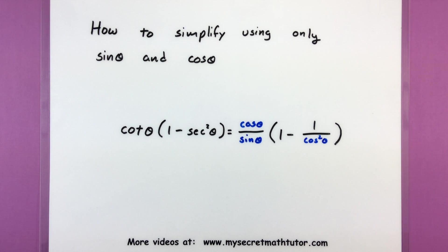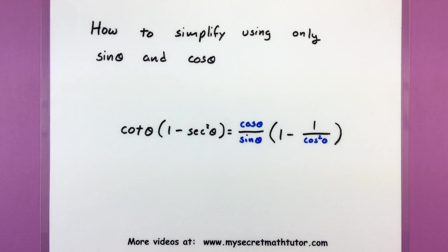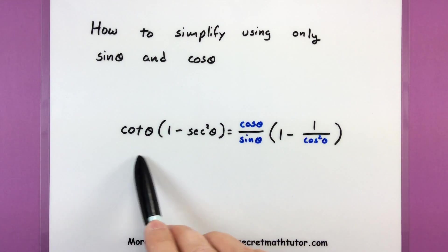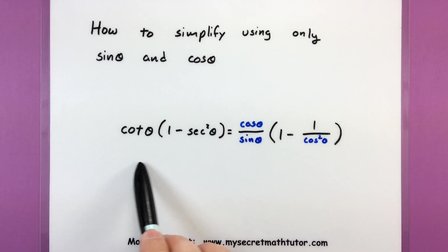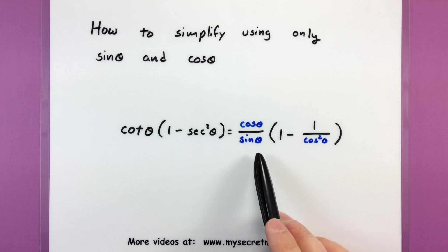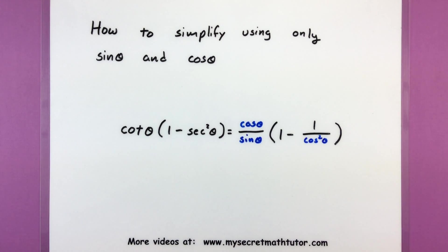Hello and welcome to My Secret Math Tutor. For this video we're going to work on simplifying trigonometric expressions using only sine and cosine. The big idea is that maybe we have a fairly complex looking trigonometric expression and we want to turn it into something that involves only sine and cosine so that we can better combine things and actually simplify it.